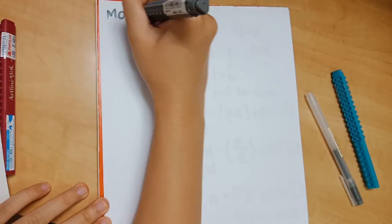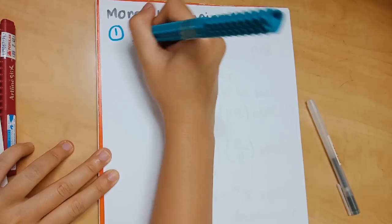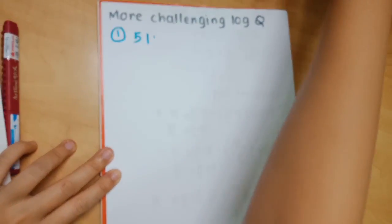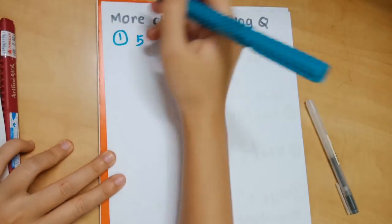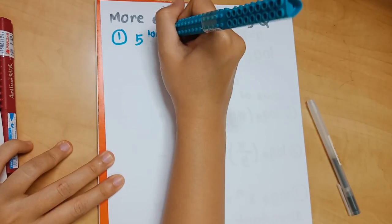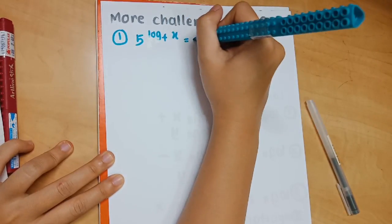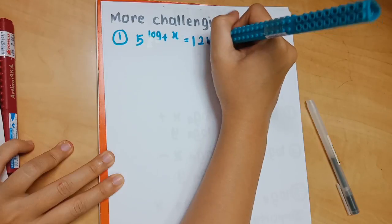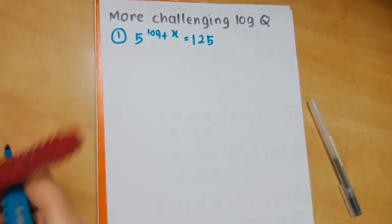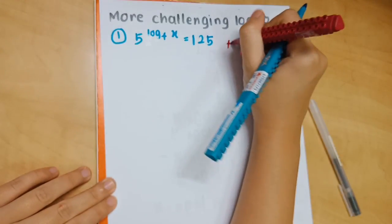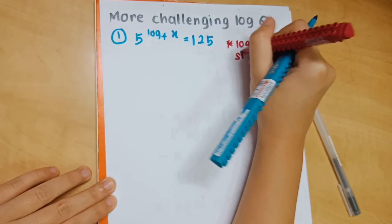Now we're going to proceed into the more challenging log questions for SPM. The first one is 5^(log_4 x) = 125. The first thing you have to do is to log both sides — if not, you won't be able to solve it. You choose a base by looking at the common multiple. Between 5 and 125, the common multiple is 5, so you're going to log everything by base 5.